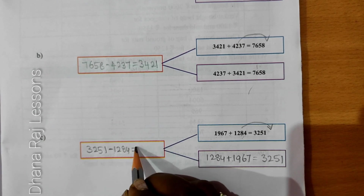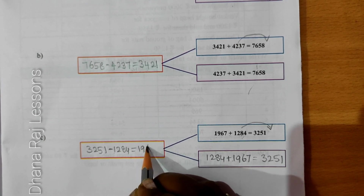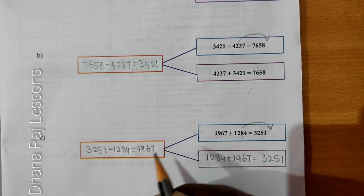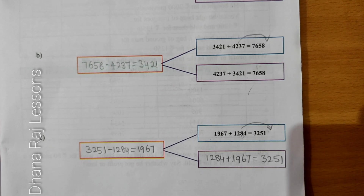1284 equal to 1967. That is the explanation for this problem.